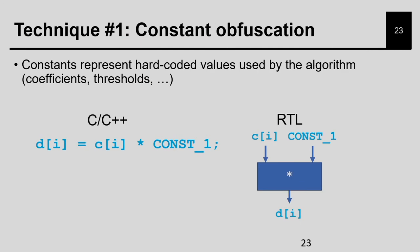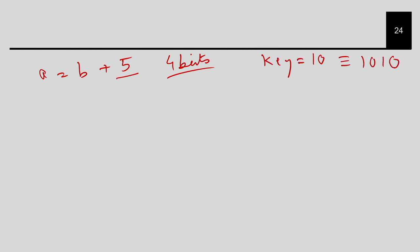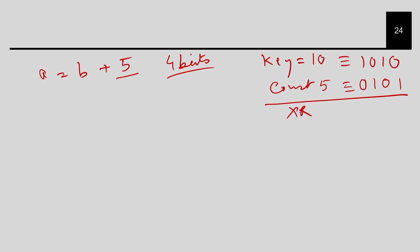First, take the constant locking question. As I said there are some constants in your behavior. Suppose there is an operation like A equal to B plus 5, and let us say this constant is 4 bits. What I am going to do: let us say my key is 10, which is equivalent to 1010 in binary, and my actual constant 5 is equivalent to 0101. Then I am going to do a XOR of these.